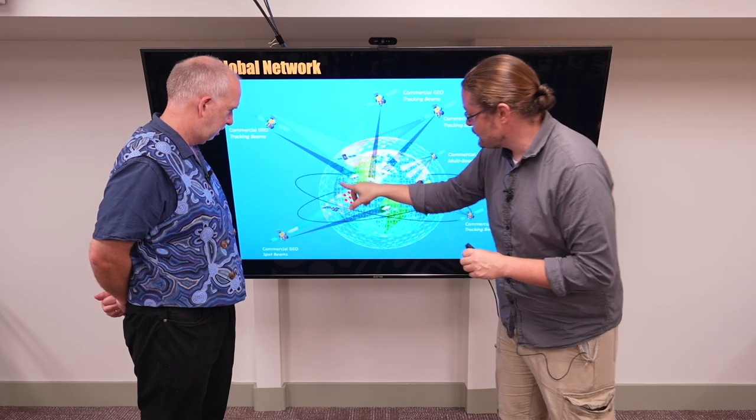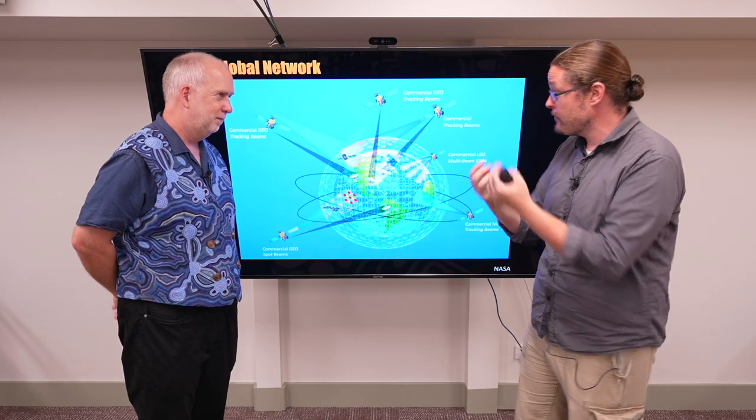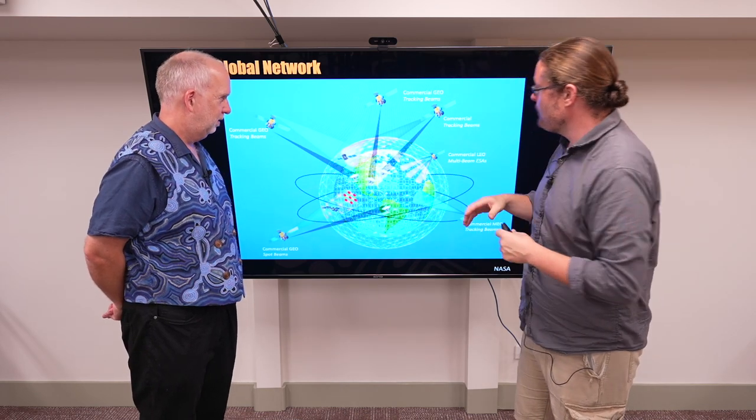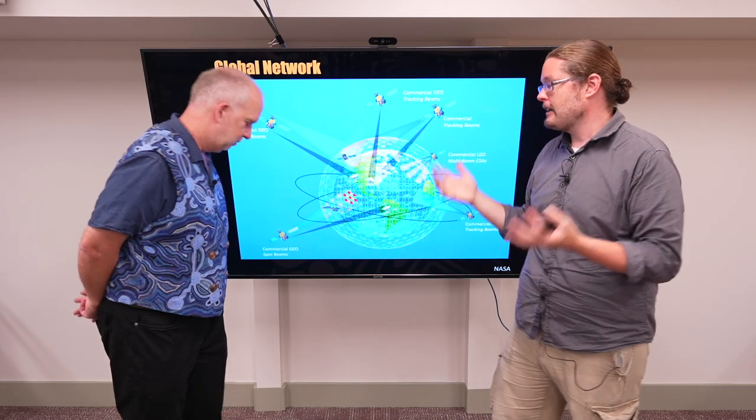So if you imagine every little circle is a point we need to communicate or observe, either up to earth or coming back down, well, you'll have some that are at these geosynchronous orbits, which, okay, fine, they're always there.